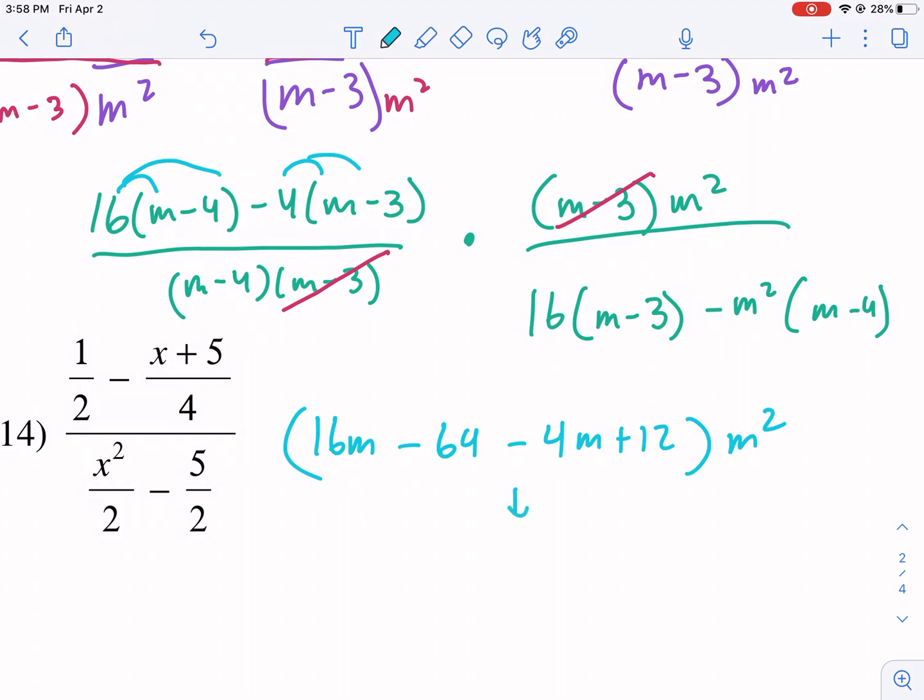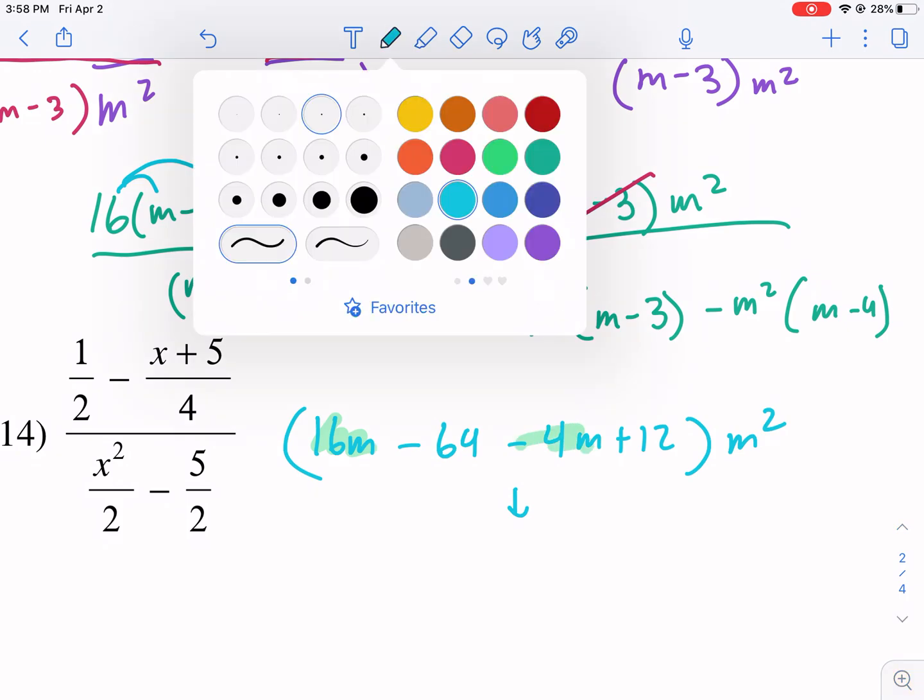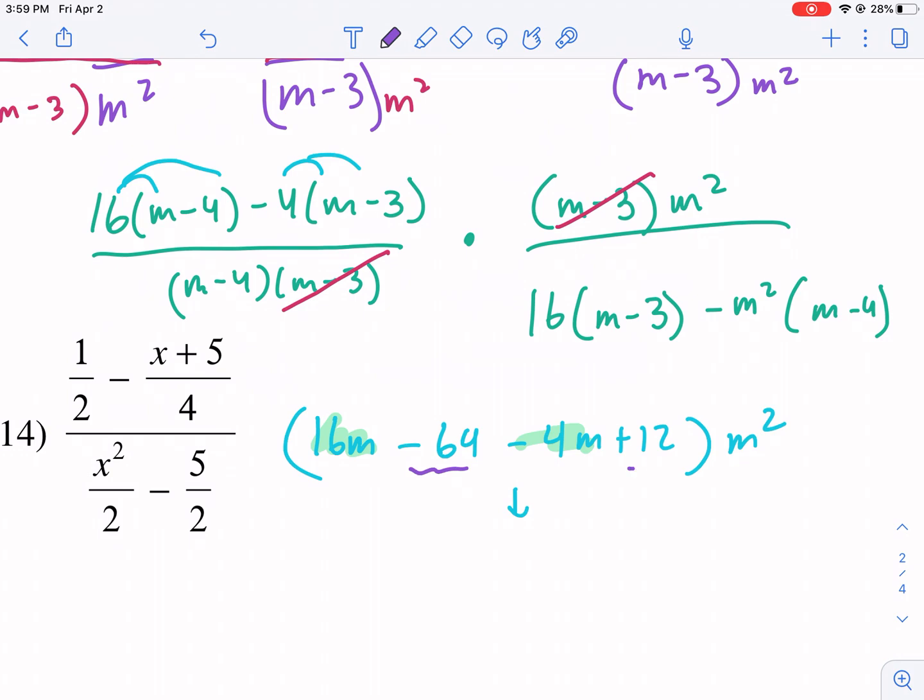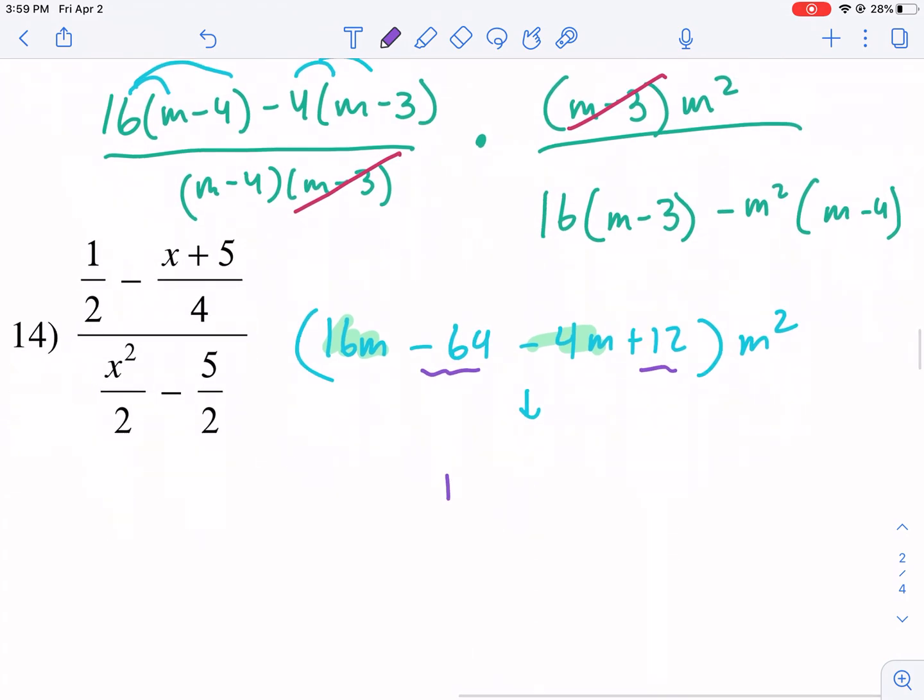I'm going to go down here. I'm going to combine like terms. So I see I have a 16m minus 4m, and then these are also like terms, negative 64 and positive 12. So I get 12m, and then I get, what is that, negative 48 here.